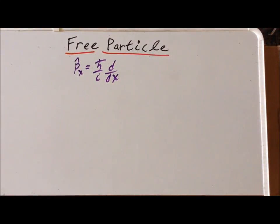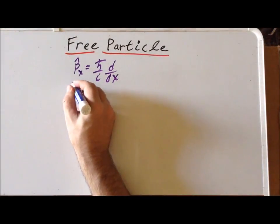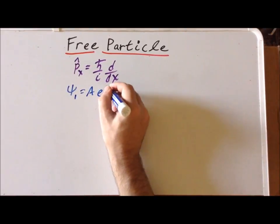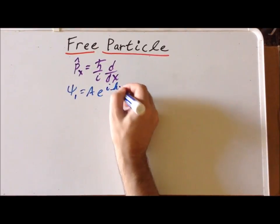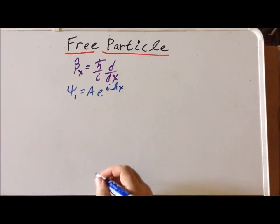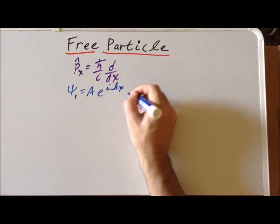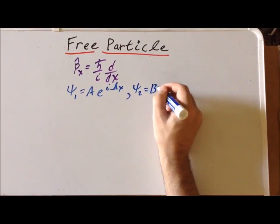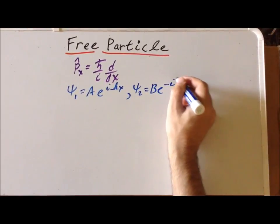Also recall that we had found two possible trial wave function solutions for the free particle. The first of those, which was called psi 1, was equal to A times e to the i kx, where k can be any value. And the second, psi 2, was B times e to the minus i kx.